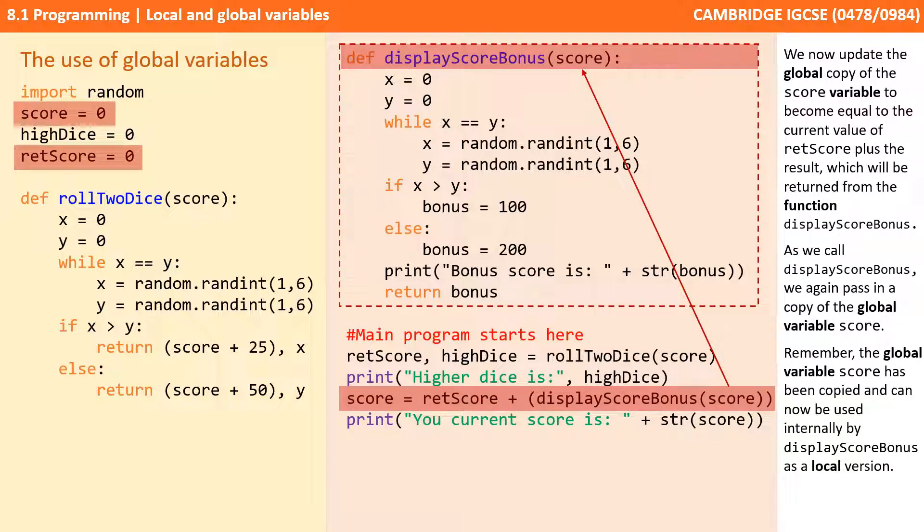We now update our global copy of the score variable to become equal to the current value of retScore plus the result, which will be returned from the function displayScoreBonus.